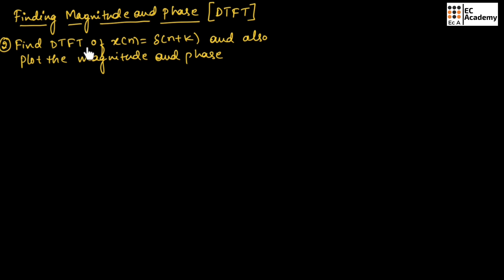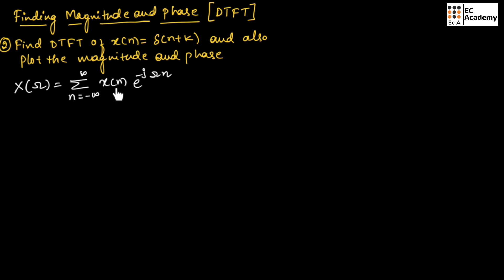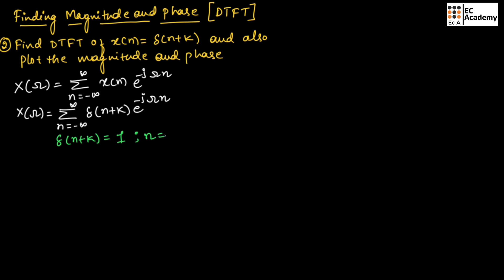Now let us take the second problem where we need to find the DTFT of x(n) = δ(n + k) and also plot the magnitude and phase. The standard DTFT formula gives X(ω) = Σ (n = −∞ to ∞) δ(n + k) e^(−jωn). We know δ(n + k) = 1 for n = −k and equals 0 for other values of n.